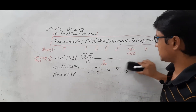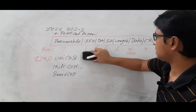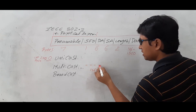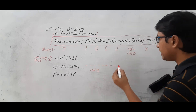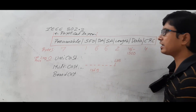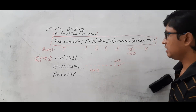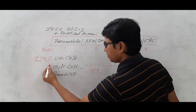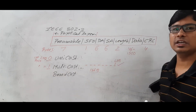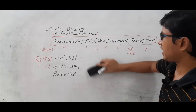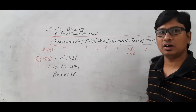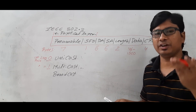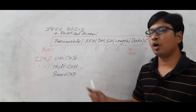Now what is multicast? In multicast, similarly, the first byte will be there. In the first byte you have 8 bits. If the LSB bit is 1, then it is multicast. If it is 0, it is unicast; if it is 1, it is multicast — meaning you need to send to a group of people. When it comes to broadcast, all 48 bits are 1s.